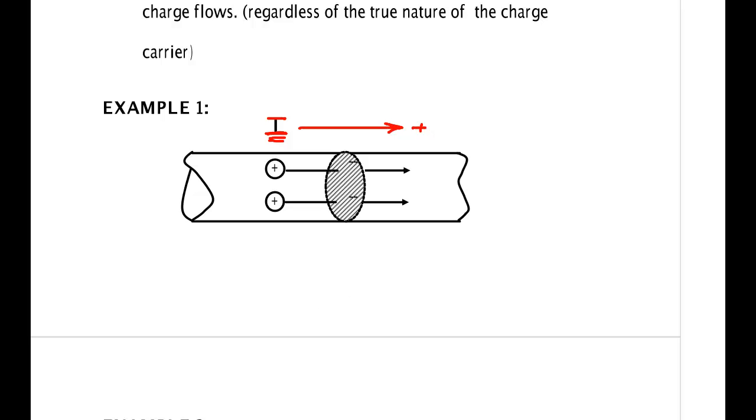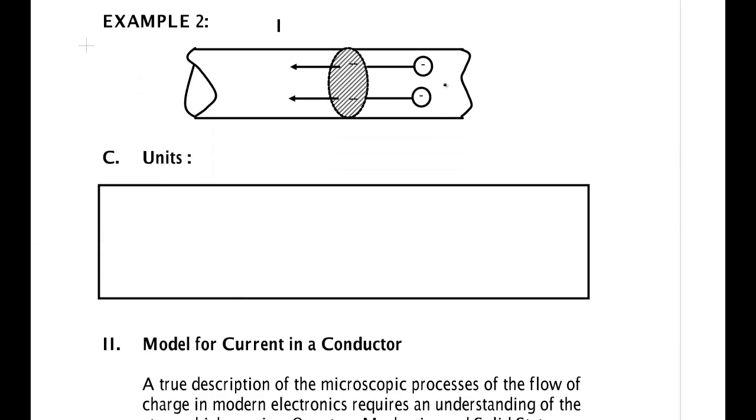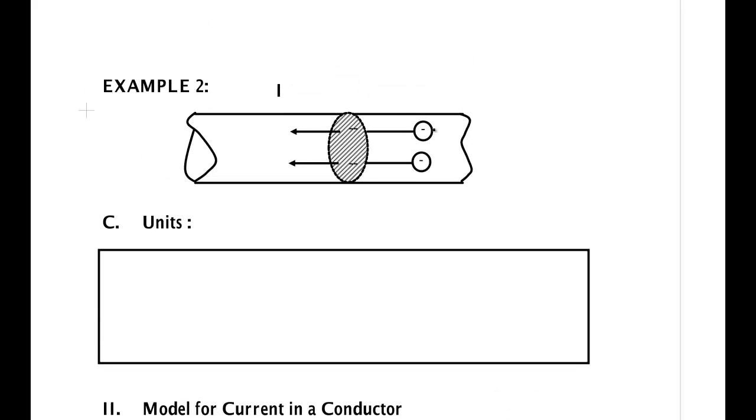In my second example, I have electrons, and the electrons or some other negatively charged particles, maybe they're negative ions, going this way. But the current, if I was using an ammeter or anything else to measure the current, the current would say that it's going that way.